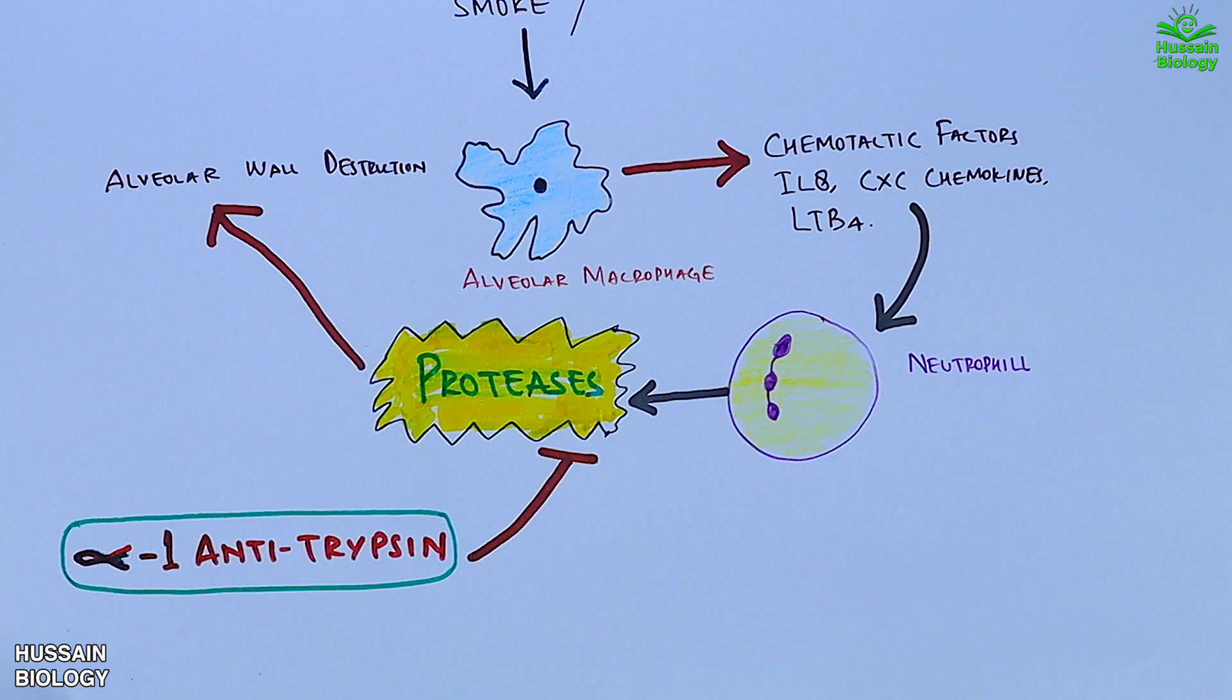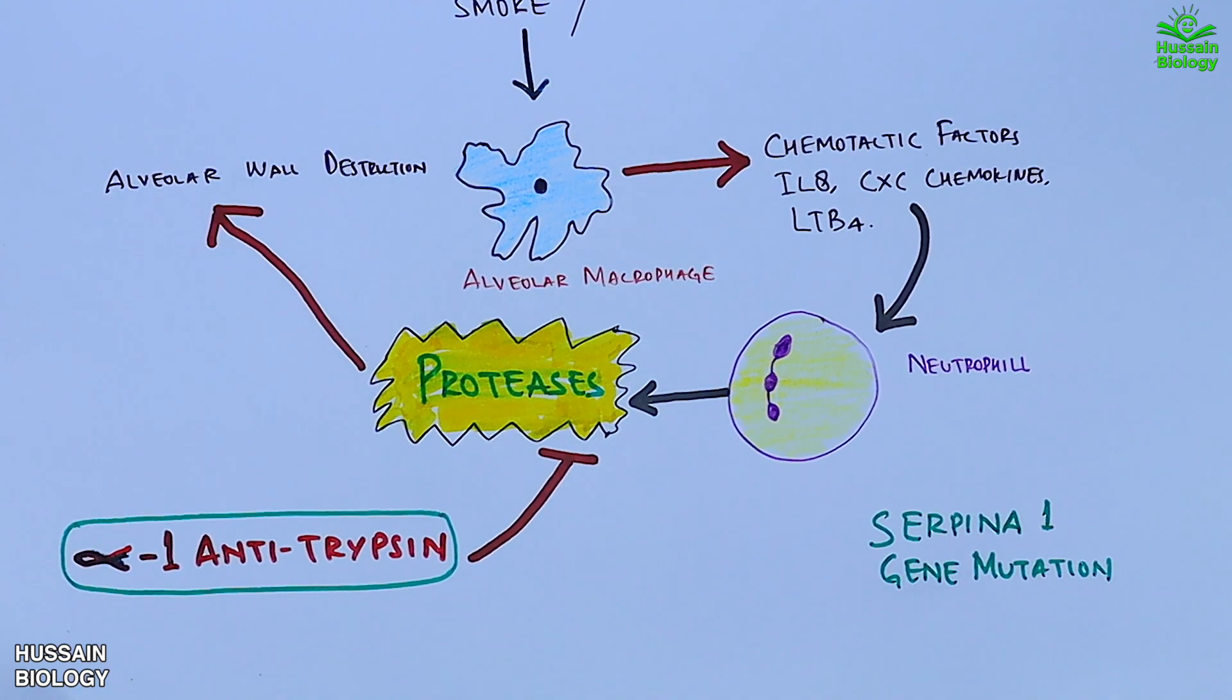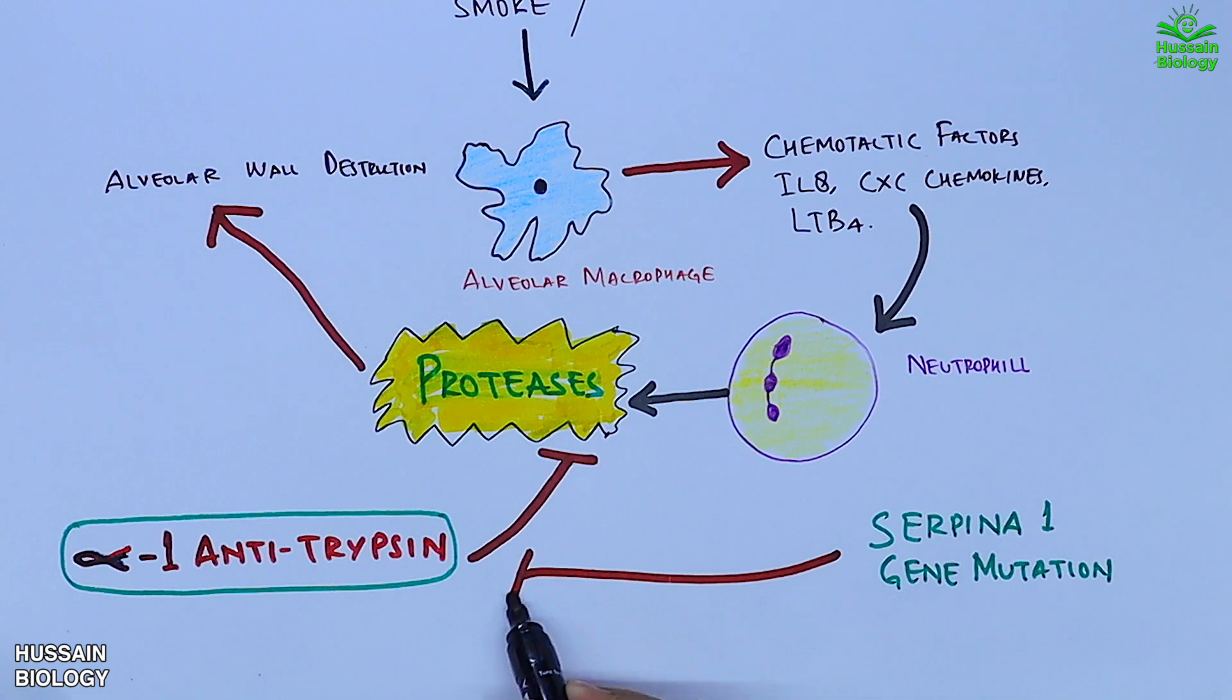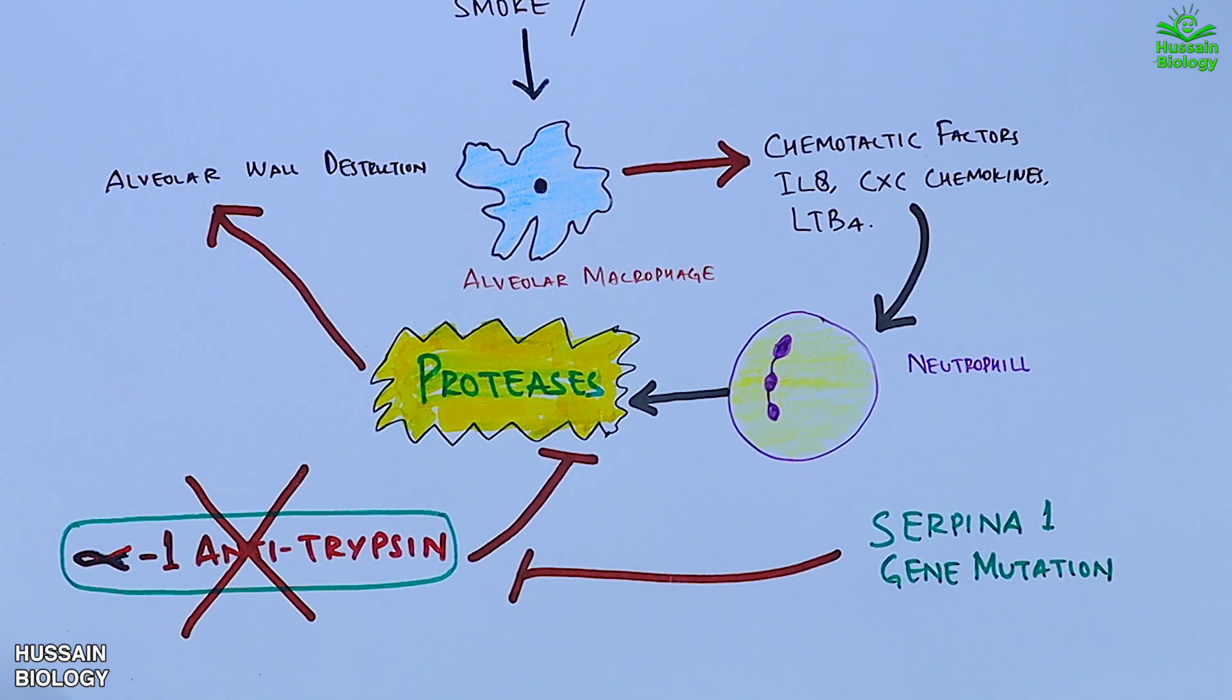But when we have the mutation of SERPINA1 gene, alpha-1 antitrypsin protein is not synthesized at all. At that time, alveolar wall destruction peaks since no proteases are getting inhibited.